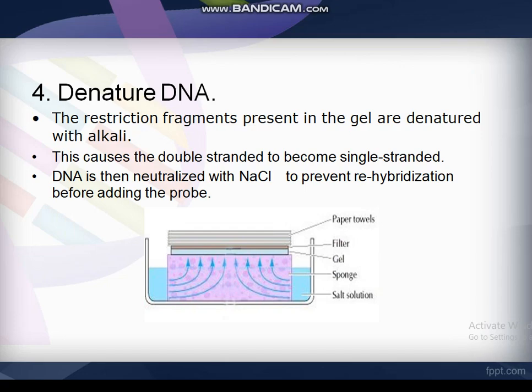The next step is denaturation. The restriction fragments present in the gel are denatured with alkali, which causes the double-stranded DNA to become single-stranded. The DNA is then neutralized with sodium chloride to prevent rehybridization before adding the probe.